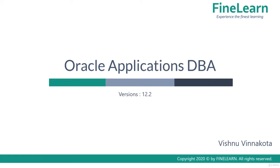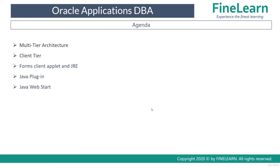Hi! In this lesson we will be seeing in detail about the client tier. First we will be seeing the basic 3-tier architecture details which we have already seen in the previous lesson as well. Then we will move on to understanding the client tier in detail, what is forms client applet and JRE, and also what is the Java plugin and Java web start.